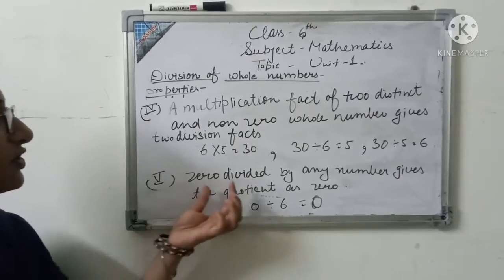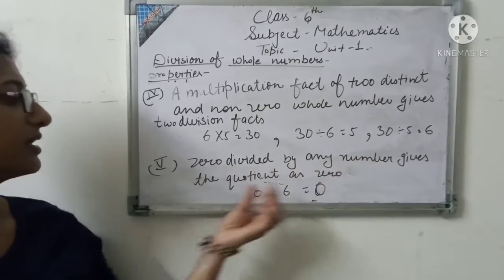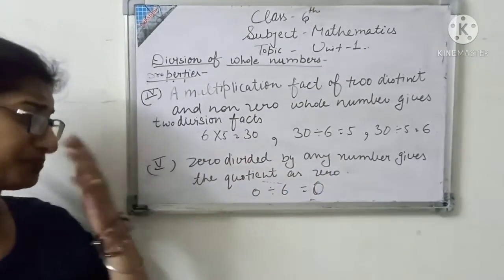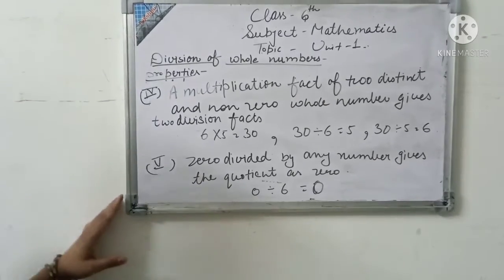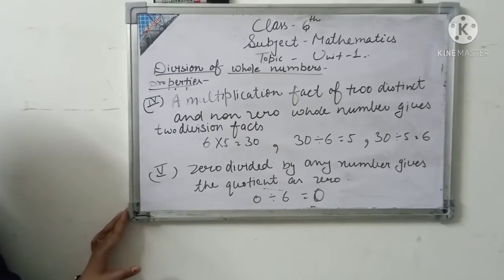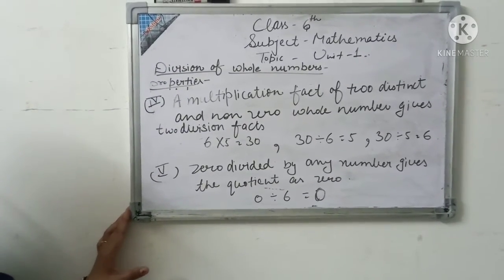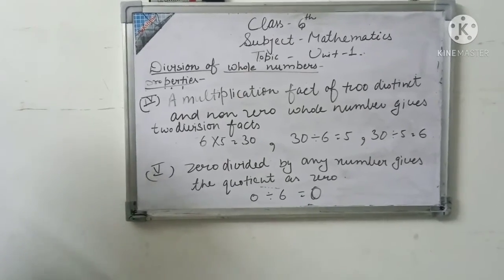Fifth property: zero divided by any number gives a quotient as zero. If you divide zero by any number, the quotient is zero. Clear?